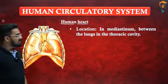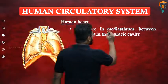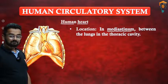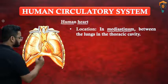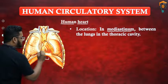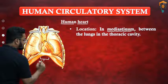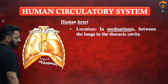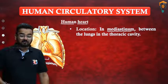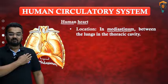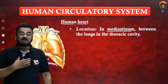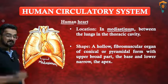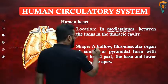Looking at the introductory parts of the human heart — the location — you can see it is in the mediastinum. The mediastinum is the space present between the two lungs. So the heart is located in the mediastinum. Many people say the heart is on the left side of the body — that is incorrect. The heart is present in the middle of the body. When you look at its shape, the heart is a hollow fibromuscular organ.